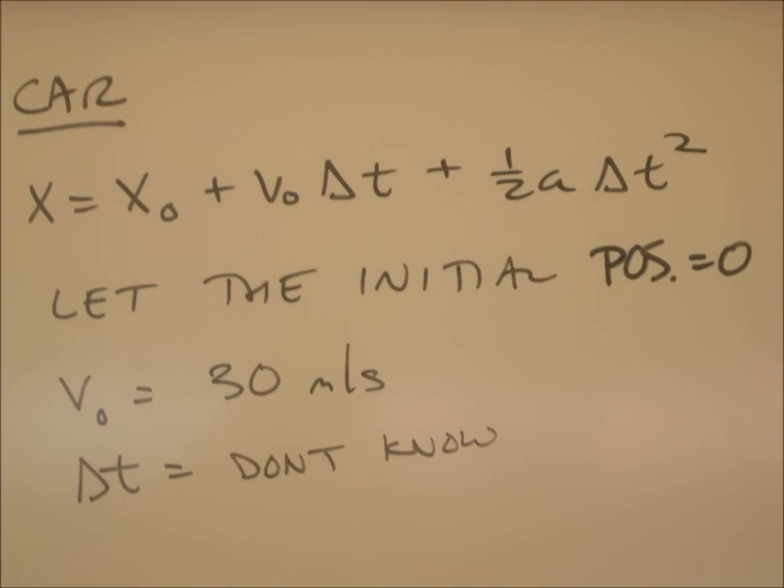Once I had the graph of the situation in my head, I felt comfortable moving on into an algebraic representation. I'm relying on the equation we derived previously: the position of the car at any future time is equal to the initial position x₀ plus v₀ times Δt, plus ½a times Δt squared.